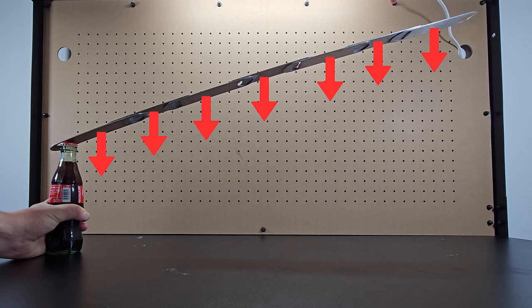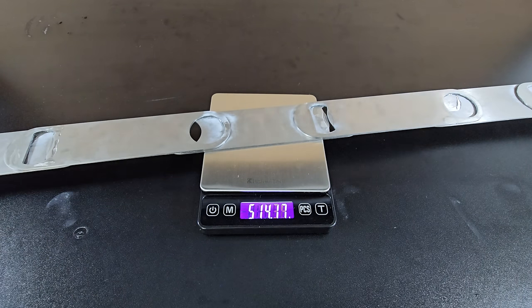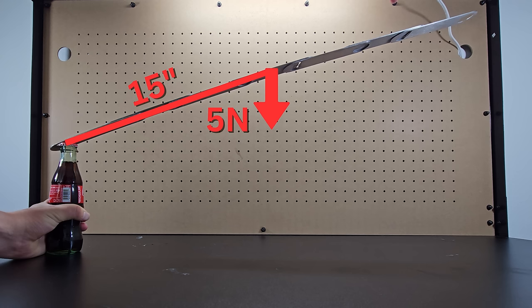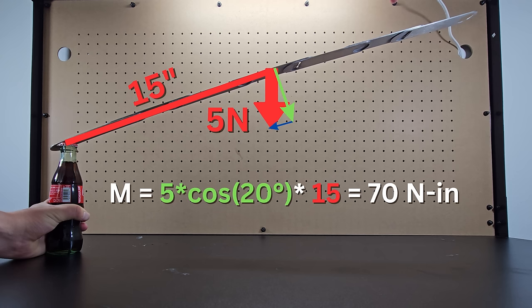However, for 7 bottle openers and glue weighing 514 grams total, and incorrectly assuming they are equally spaced for simplicity, you get that the weight contributes to a moment of 70 newton inches.